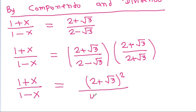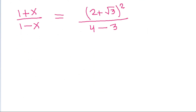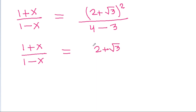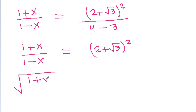So, 2 squared is 4 minus root 3 squared is 3, giving us (1 plus x) by (1 minus x) is equal to (2 plus root 3) squared, and 4 minus 3 will be 1. If we take the square root of both sides, we get square root of (1 plus x) by (1 minus x).